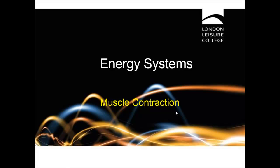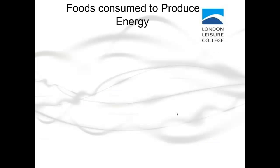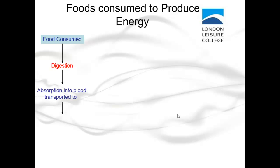This presentation is about energy systems. Foods are consumed to produce energy. When you consume food, that food is digested, absorbed into the blood, and transported to your active cells, where it's either used or stored in the muscle.